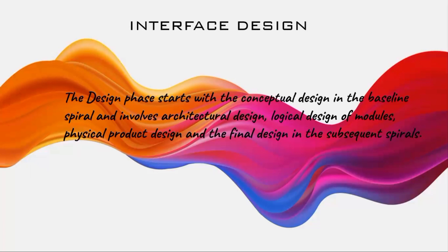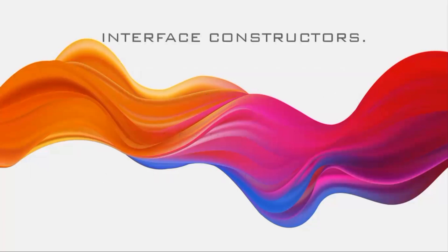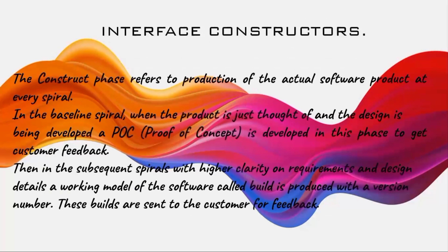The design phase is where we create a design for a specific project. The third phase is interface construction. This phase refers to the production of the actual software product at every spiral. When it comes to the coding part, once the design is approved by your team or project lead, you start with the development of that design — coding, implementing, and building the product.